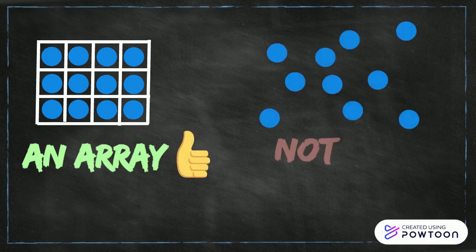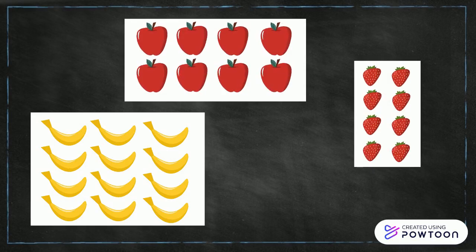An array is a way to organize and group items into equal horizontal rows and vertical columns. When creating an array, you can really use anything to represent the items in your rows. For today's lesson, we are going to use gray dots to represent the items in our rows.